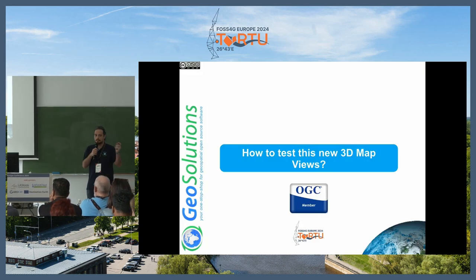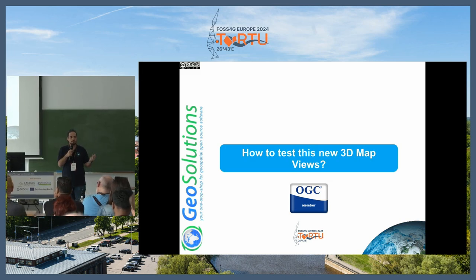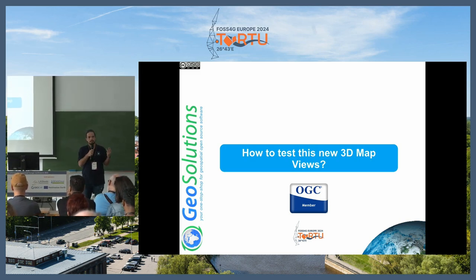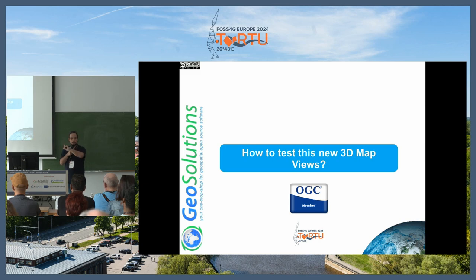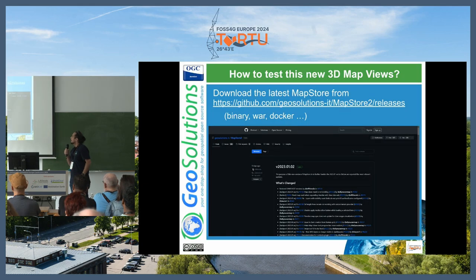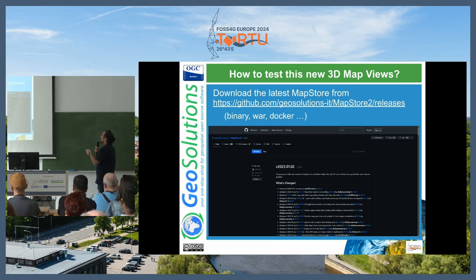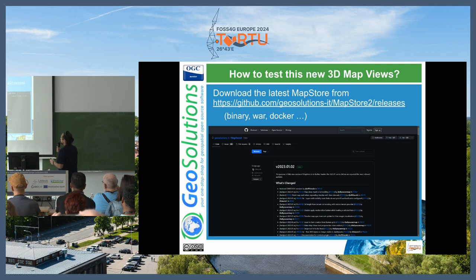In this presentation I will show three typical scenarios that you can find in 3D for providing data about a city, using the tool called MapViews. To use it, you have to download MapStore from the website or GitHub releases, and you can install it with a binary, with a WAR file, or with Docker. Then create a new map — logging in as administrator or as a user that can edit maps.